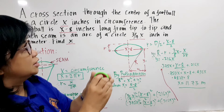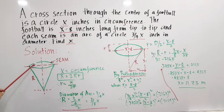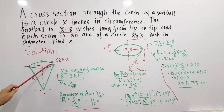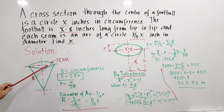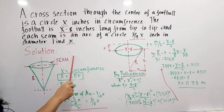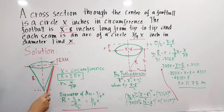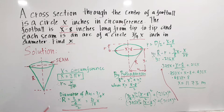This is the circumference of the circle. If we make a rough sketch, this is a circle, and this is the arc of a circle — that's what is referred to here. Each seam is an arc of a circle, so those seams are a part of the circumference of a circle. This one seam is an arc of a circle.